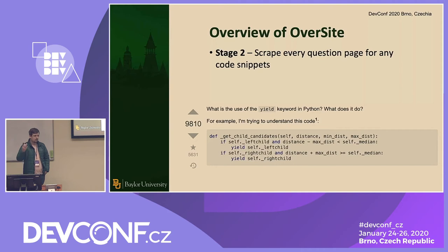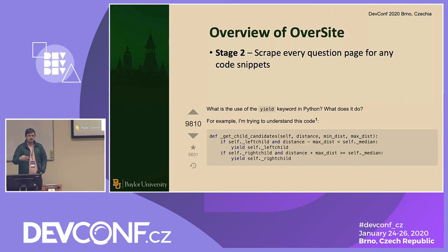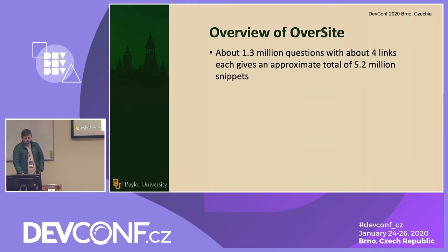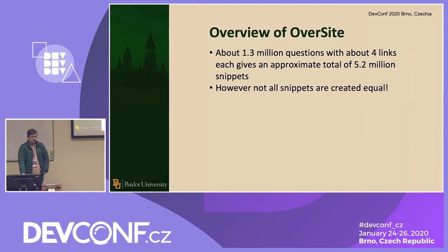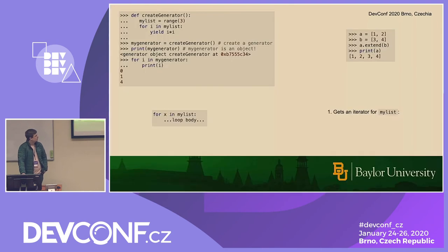In the future, once we've gotten through this initial scraping of the entire data set, we'll be able to just check every three or four days and say 'hey, has there been any new questions?' and go ahead and scrape those and add them. A lot of that as well is that we want to throw out a lot of the code snippets we get — we've seen about four snippets per question, which is about 5.2 million total, but they're not all created equal and a lot have to be thrown out.